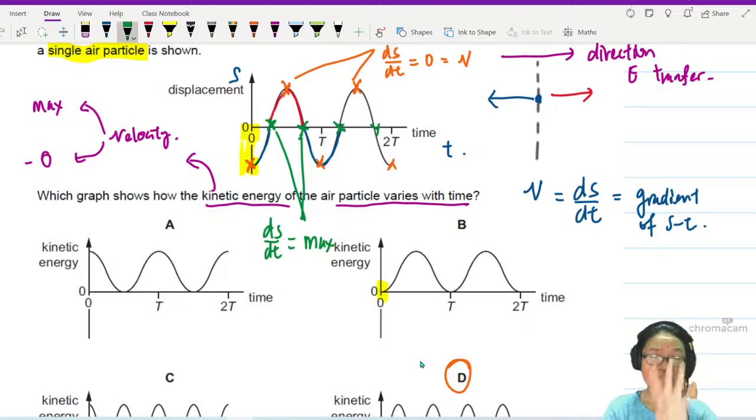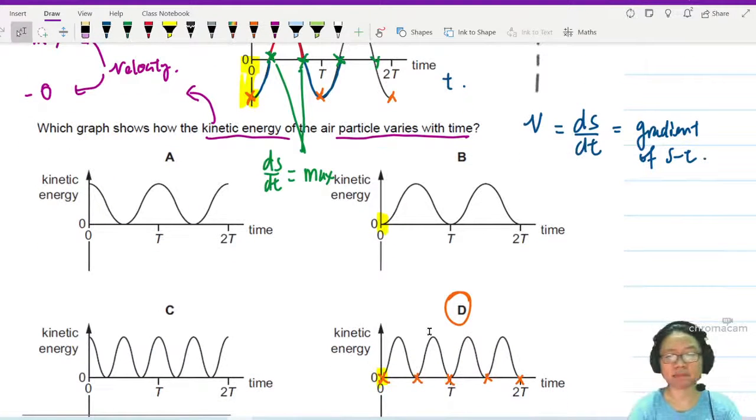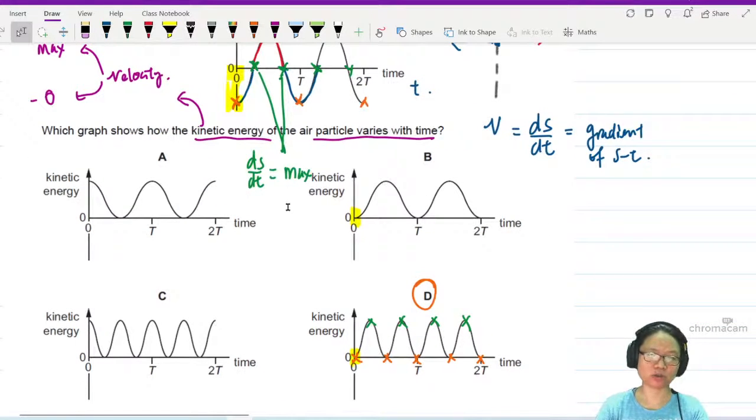Your KE is maximum four times. Let's see. One, two, three, four. Okay. So use gradient now.